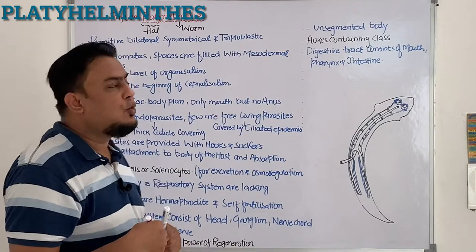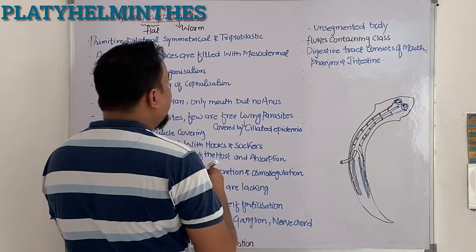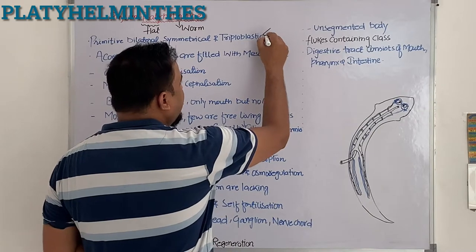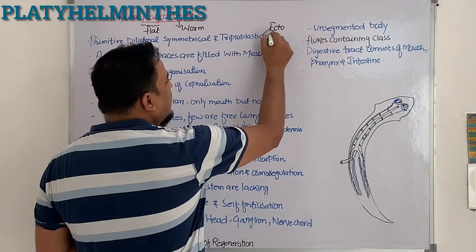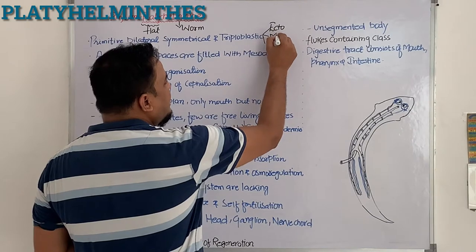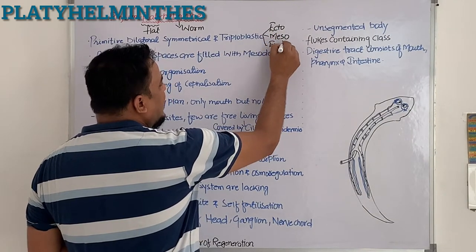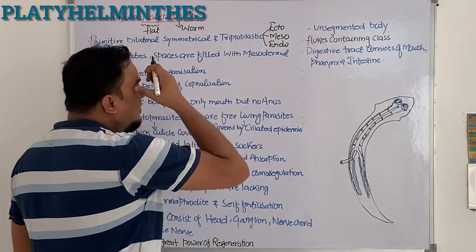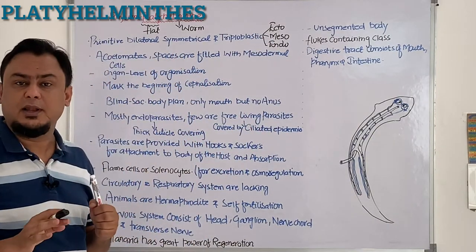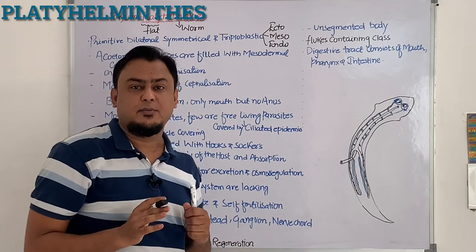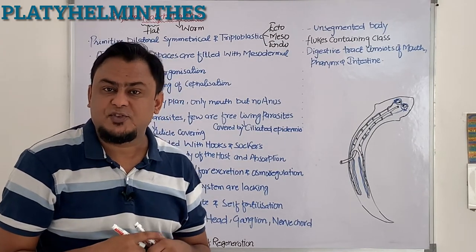These are triploblastic animals. In triploblastic animals, the outer layer is ectoderm, the middle one is mesoderm, and the inner one is endoderm. An interesting fact is that this phylum is primitive bilaterally symmetrical and primitive triploblastic.